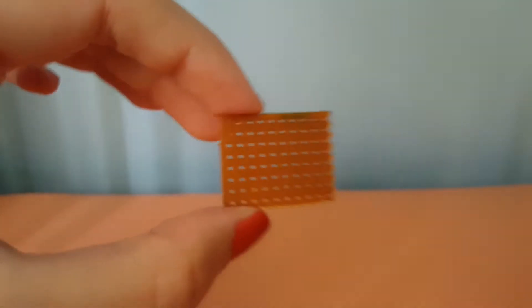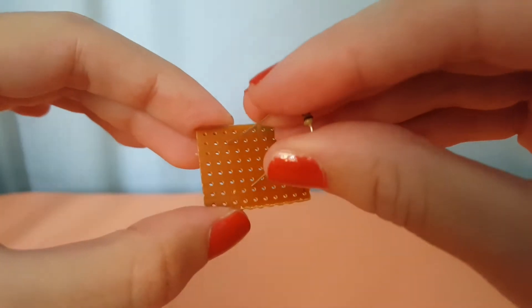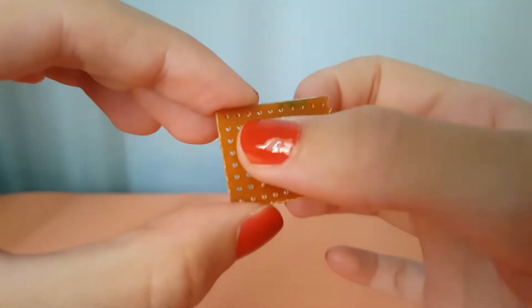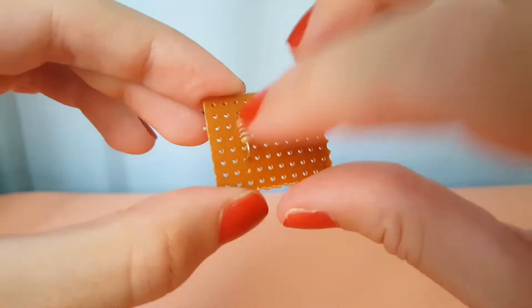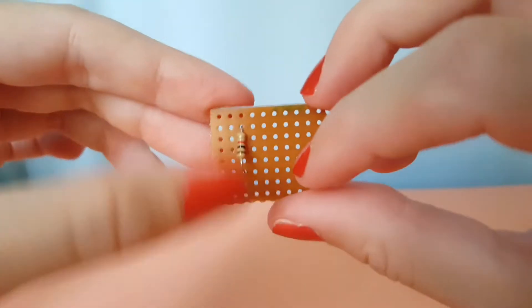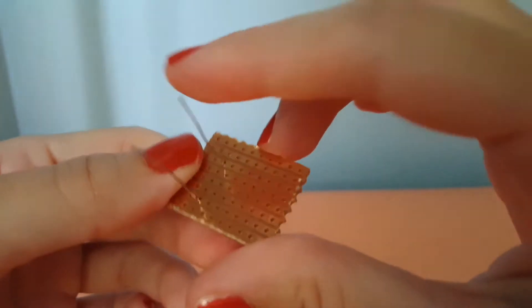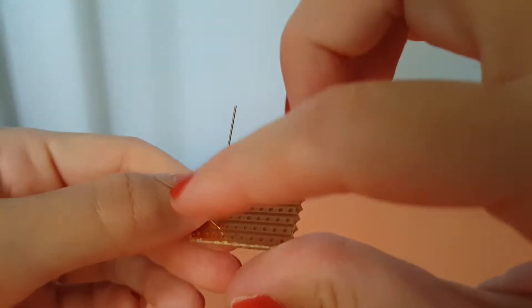Now let's insert a resistor through the component side of our strip board. To keep this in place, it's always ideal that before soldering you will bend the leads of your component.